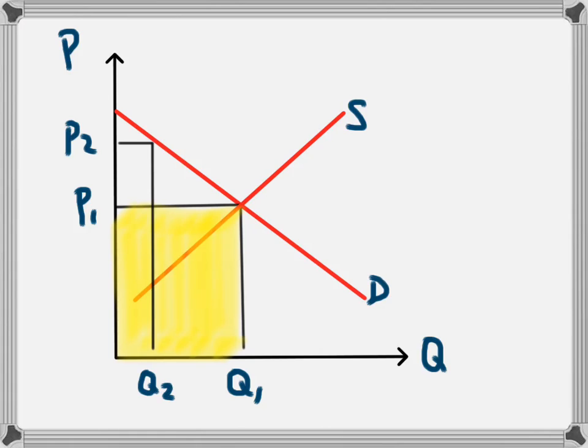So every time they buy the product, there's an advantage to them in that they would be willing to pay more, but they don't have to. So the amount from P2 to P1 is a surplus to those consumers. The consumer surplus for those consumers is that green area there. That's the money that they would be willing to give to the businesses for this product, but they don't need to, so they get to keep it.